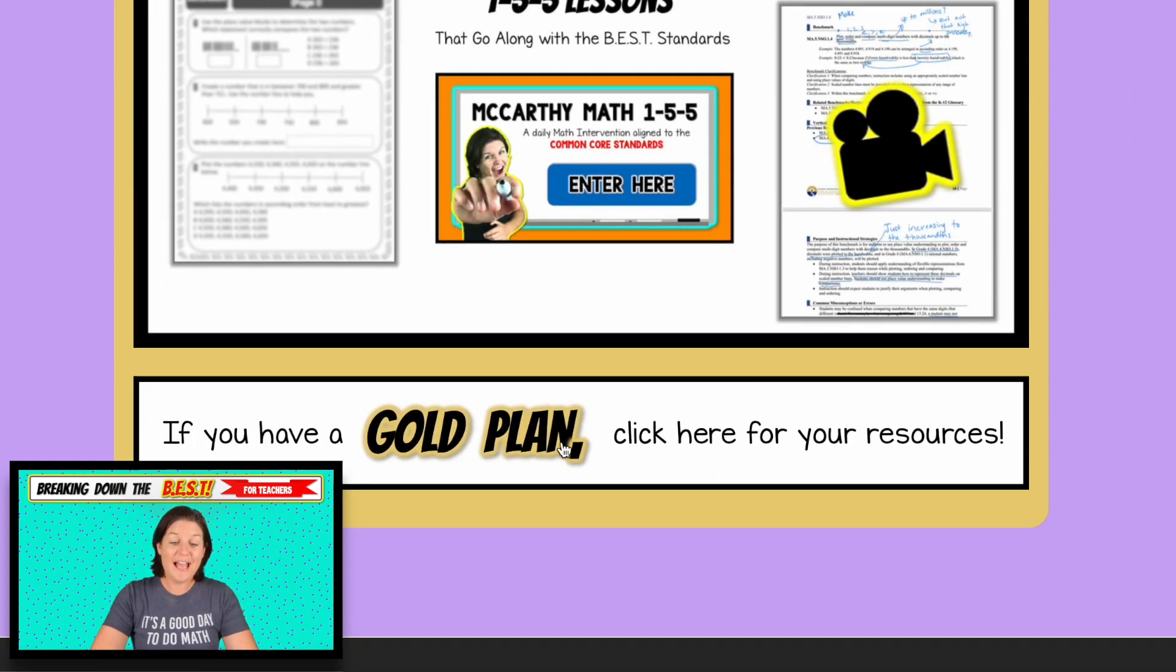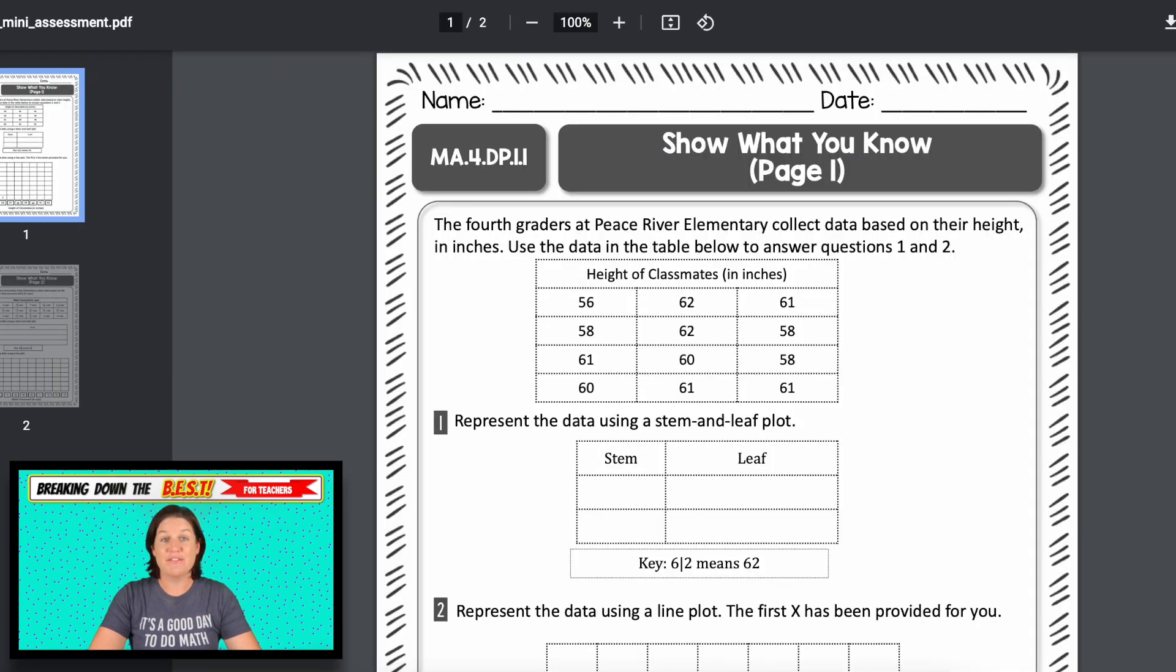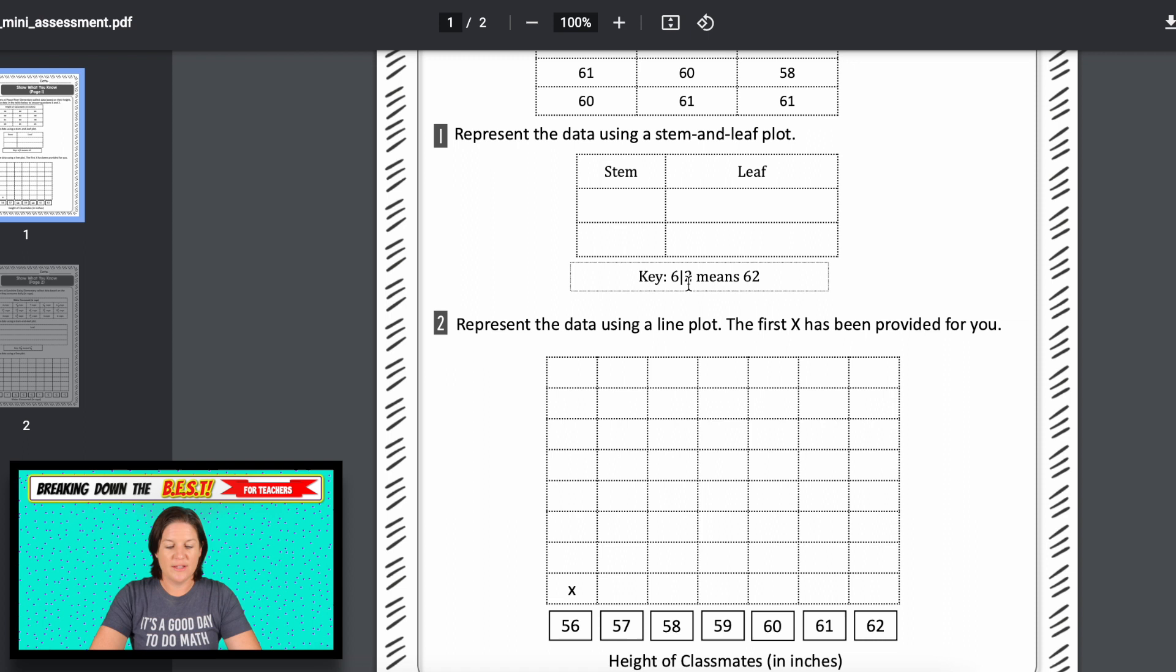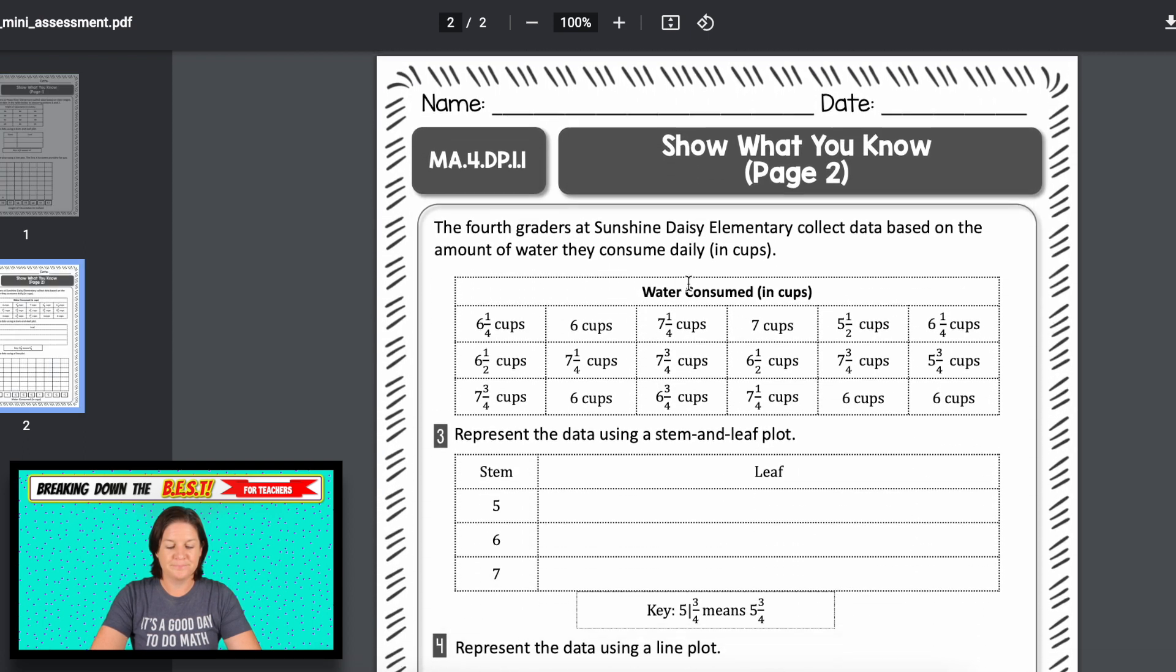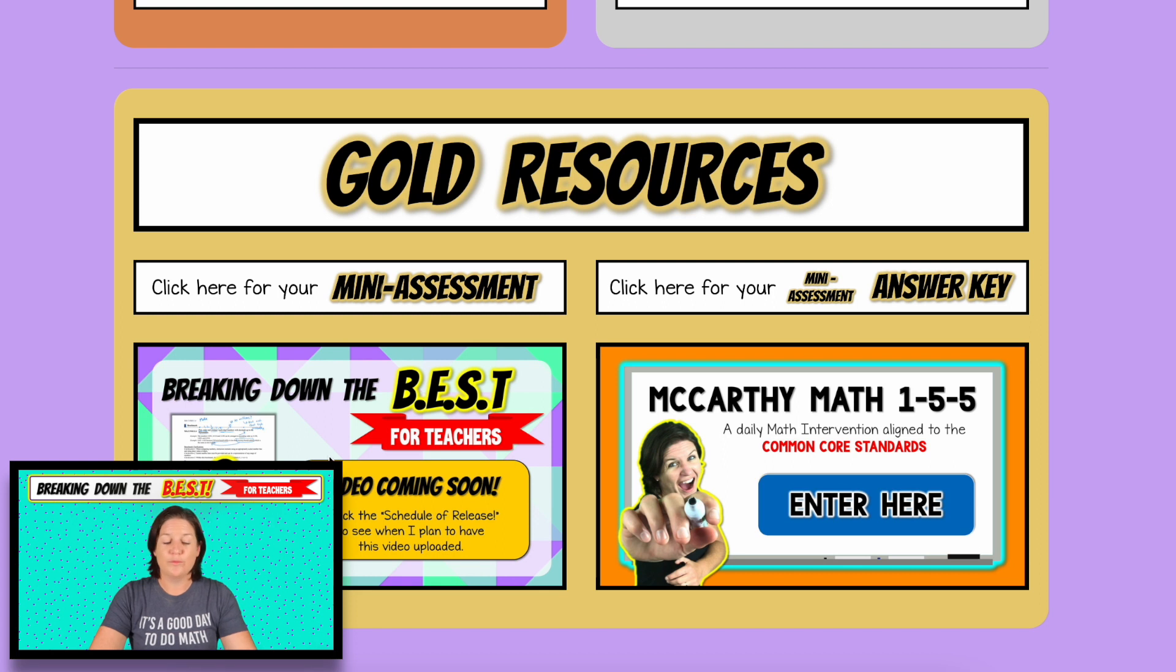Everything that we've gone over, the answer keys for that are right here. And then if you have the gold plan, you have access to everything that we've gone over plus even more. You have a mini assessment right here and you have this for every single standard. You can see the standard is right here. It says show what you know, so you can use this as a mini assessment or as extra practice, however you want to use it. Usually there's about four to five questions. You can see the variety of question types specifically aligned. The answer key for that is right here. You also, as a gold member, have access to these Breaking Down the Best episodes, which go over all of the resources and break down the standard. It's right here with all of your resources, just being a click or two away. Just know that these videos are available also on YouTube. They just contain ads. So it's a nice little bonus of being a gold member, having it ad-free right there.